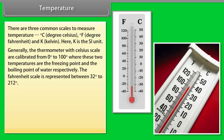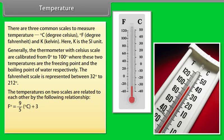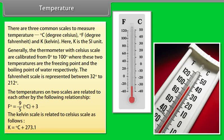The temperatures on two scales are related to each other by the following relationship: degree Fahrenheit is equal to 9/5 × (degree Celsius) + 32. The Kelvin scale is related to Celsius scale as follows: Kelvin is equal to degree Celsius plus 273.15.